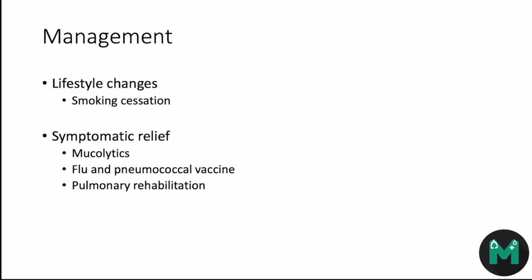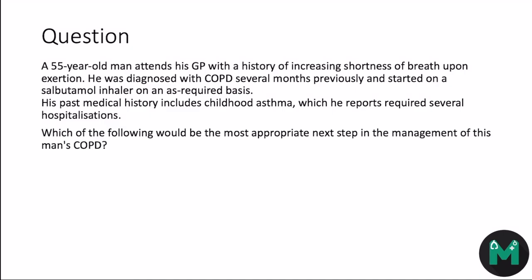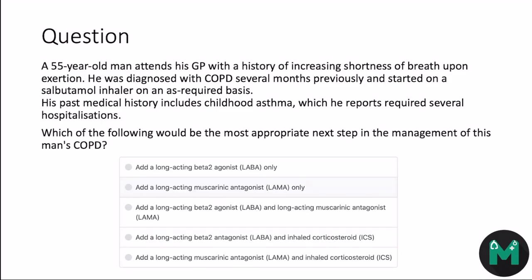Physiotherapy can also help with excess mucus secretion. Now, a practice question: a 55-year-old man attends his GP with a history of increasing shortness of breath upon exertion. He was diagnosed with COPD several months previously and started on a salbutamol inhaler as required — that's a SABA. His past medical history includes childhood asthma requiring several hospitalisations. Which of the following would be the most appropriate next step in the management of his COPD: LABA only, LABA and LAMA, LABA and ICS, or LAMA and ICS?